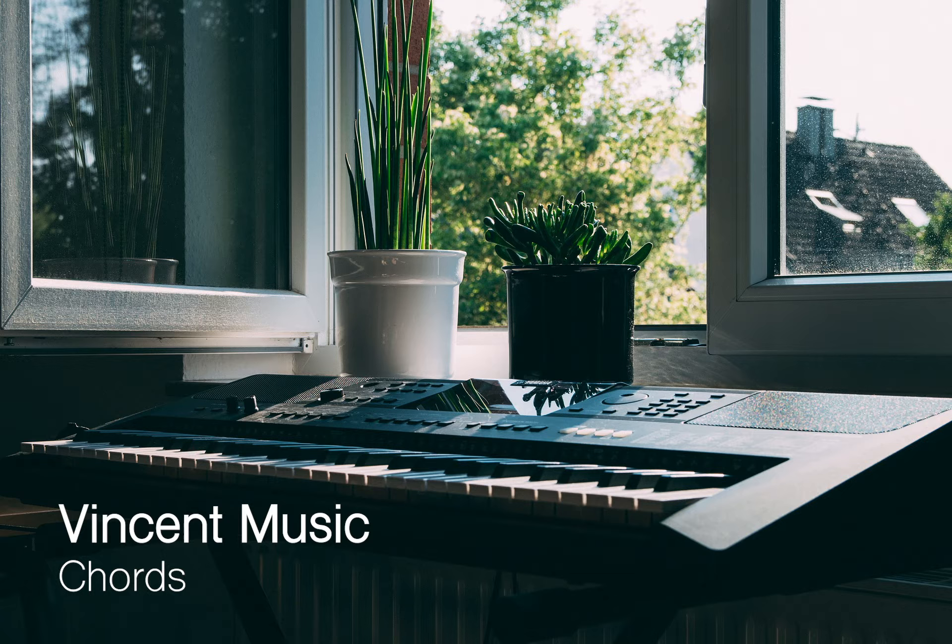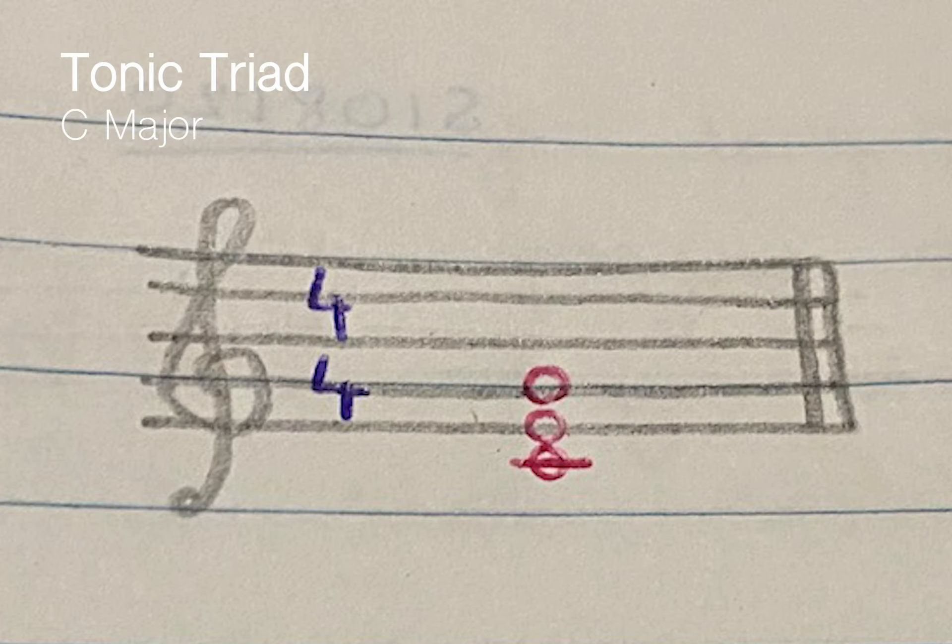So first we'll look at the tonic triad. The example we're going to use is the C major key, the C major scale. In the tonic triad, it contains the first three notes: the tonic, third, and fifth note. So for example, if we look at the C major key, the tonic triad will be C, E, and G.